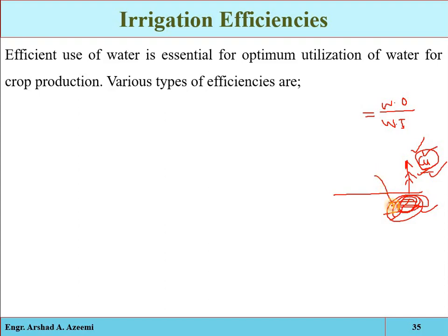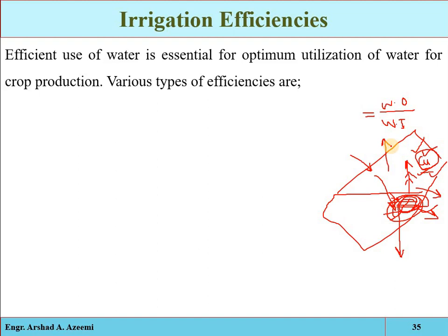How much water is stored versus how much was applied gives the water storage efficiency. Some applied water will deep percolate below the root zone and not be stored entirely. The ratio of water stored in the root zone to water applied to the field is the water application efficiency. Similarly, how much water is delivered to the field from a reservoir or river through a canal system gives the water conveyance efficiency.